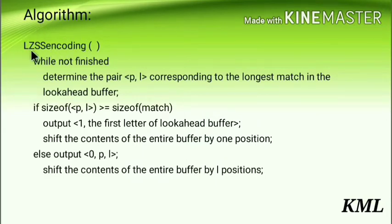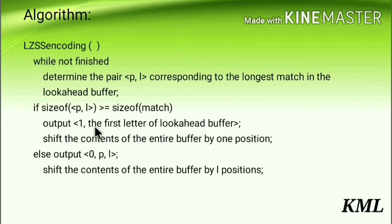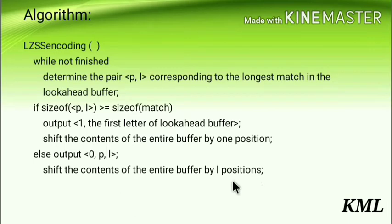Here is the LZSS encoding algorithm: while not finished, determine the pair P, L corresponding to the longest match in the look-ahead buffer. Then we have two conditions: if size of P,L is greater than or equal to size of match, output a 1 and the first letter of the look-ahead buffer, then shift the entire buffer by one position. Else, output 0, P, L and shift the buffer by L positions. Here P is the position and L is the length, as seen in the LZ77 technique.